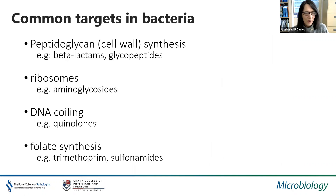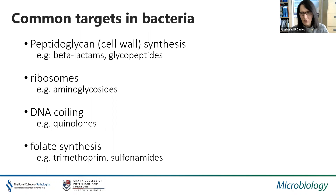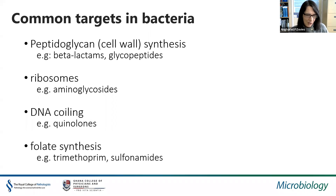Common targets found in bacteria include the peptidoglycan cell wall — human cells don't have a cell wall, but bacteria have peptidoglycan walls targeted by the important beta-lactam group of antibiotics as well as glycopeptides like vancomycin and teicoplanin. Other antibiotics target the ribosomes, DNA coiling, and folate synthesis, with examples of different antibiotic classes acting against each of those targets.